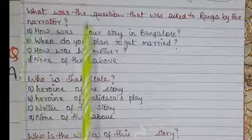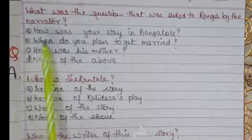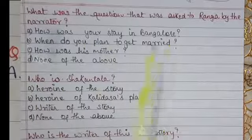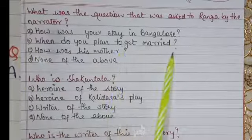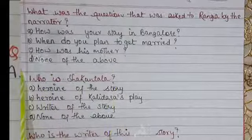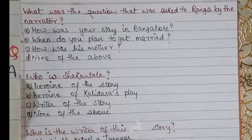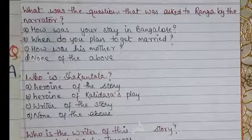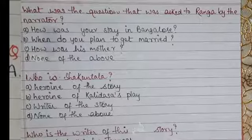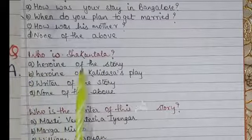What was the question asked to Ranga by the narrator? Option A: How was your stay in Bangalore, Option B: When do you plan to get married, Option C: How was his mother, Option D: None of the above. The prominent question was related to marriage, which is also linked with the title, therefore Option B is correct — 'When do you plan to get married?'